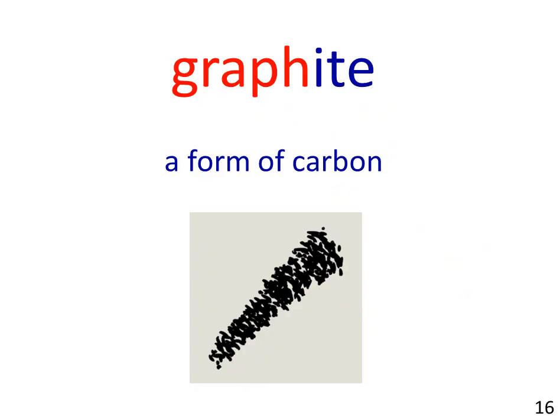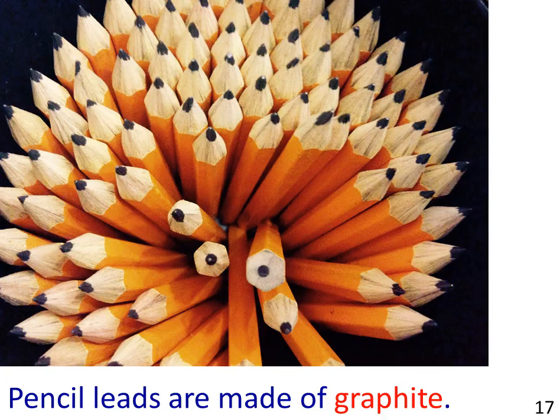After this, we have the word graphite: a form of carbon. The picture shows a cluster of pencils. The sentence example reads: Pencil leads are made of graphite.